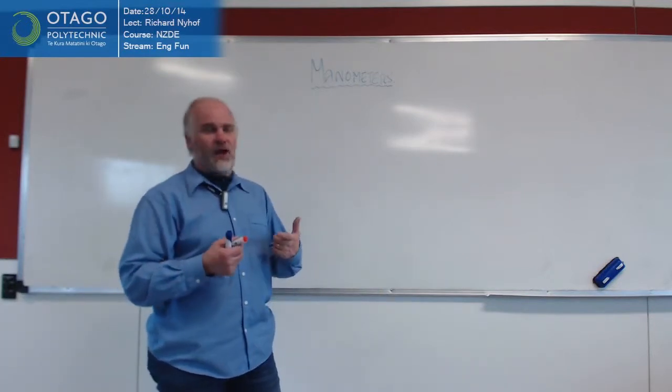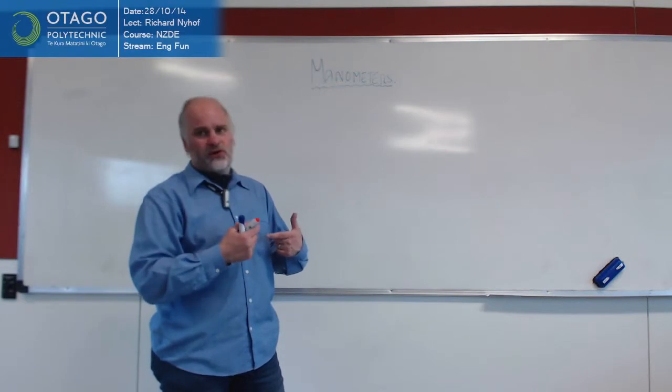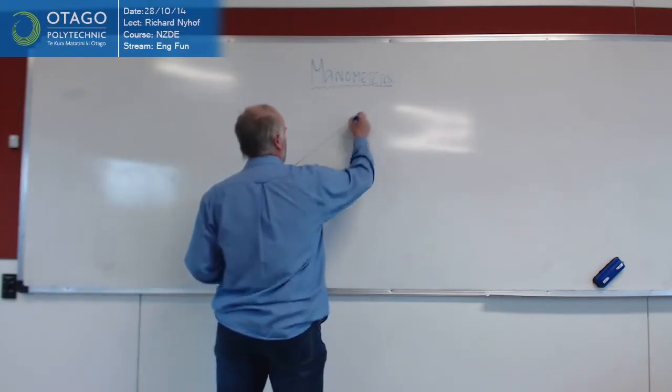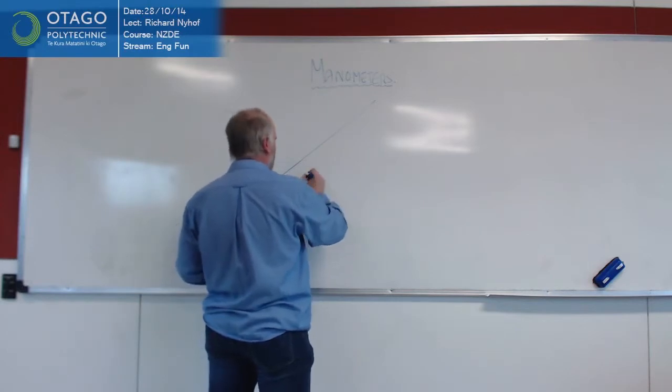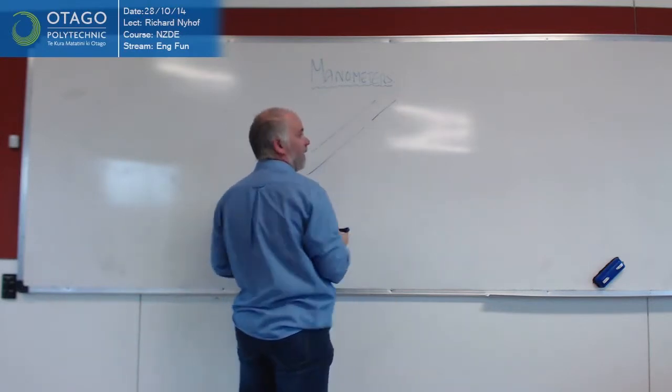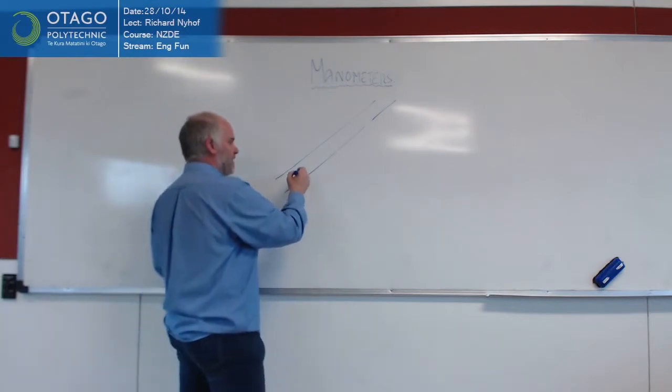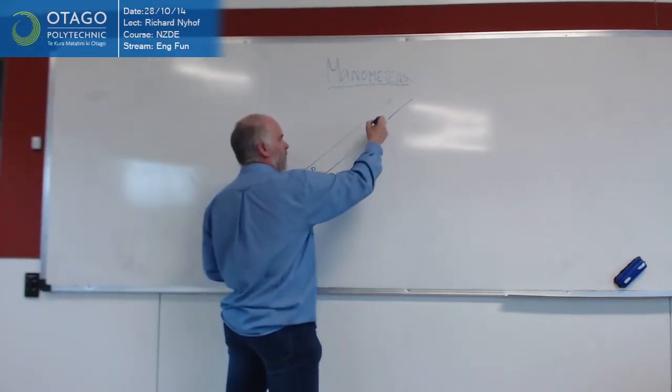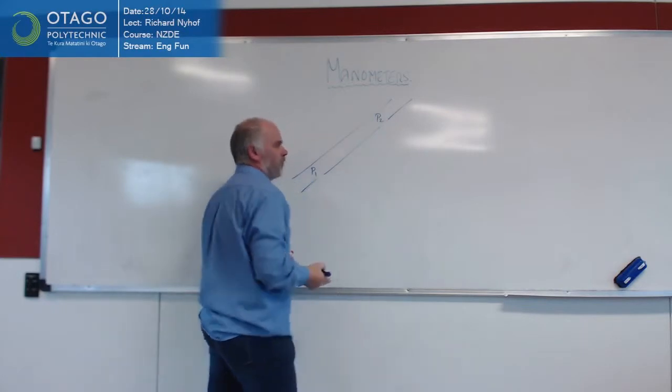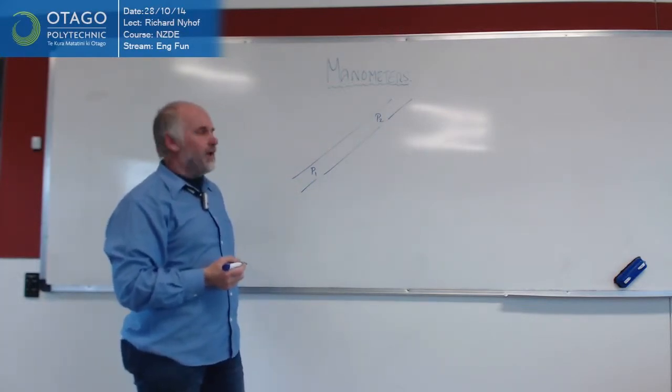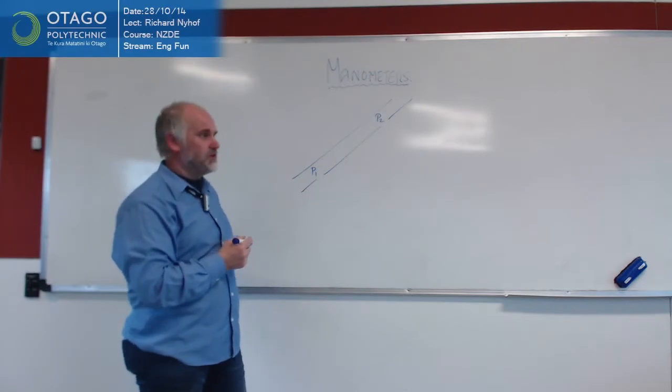This is basically used to work out the difference of pressure in two points on a pipe. So if, for example, we had an oil pipe of some sort, and we wanted to work out the difference in pressure at two points - down here we've got pressure one, and up here we've got pressure two on the pipe. And we try to figure out what the difference between those two pressures is.